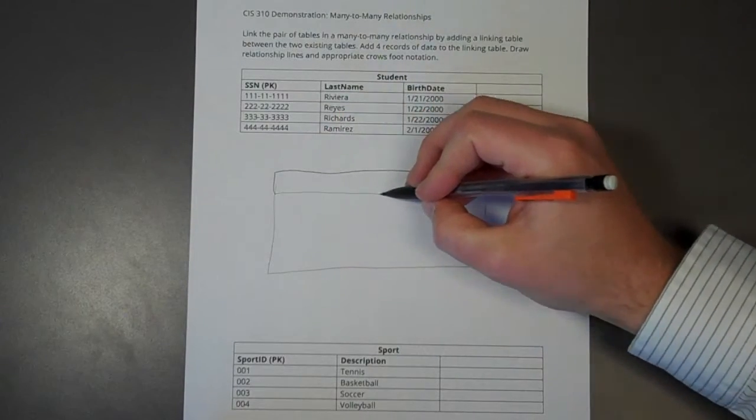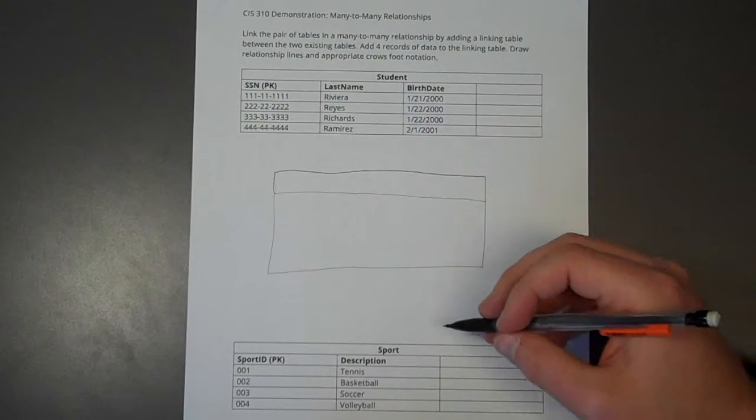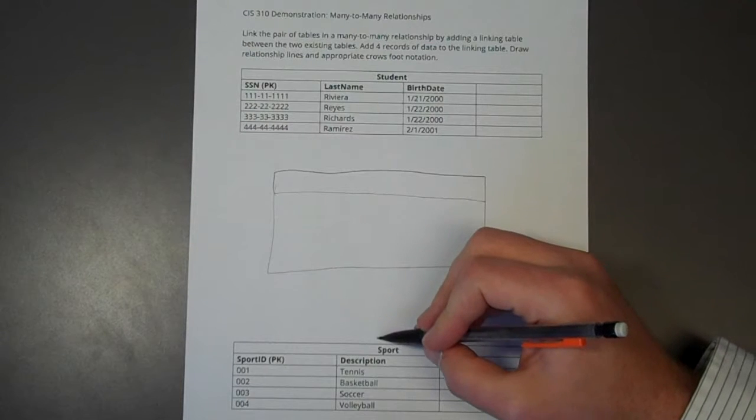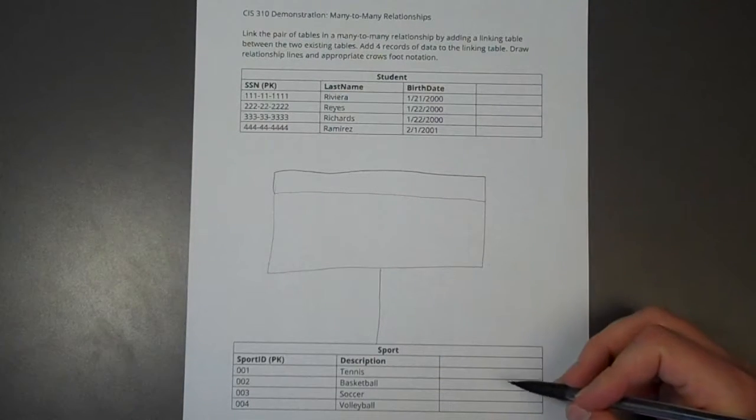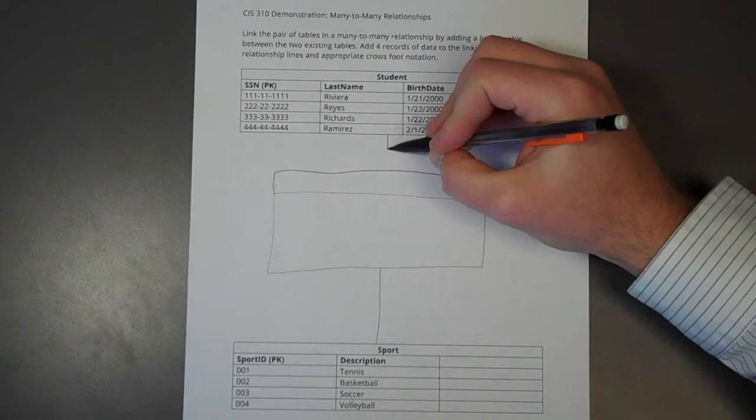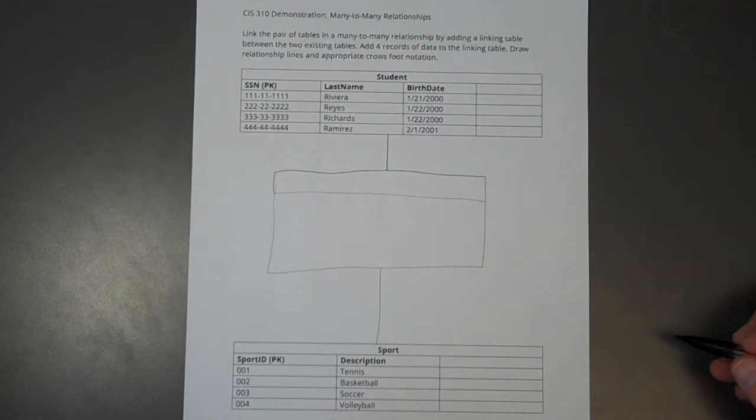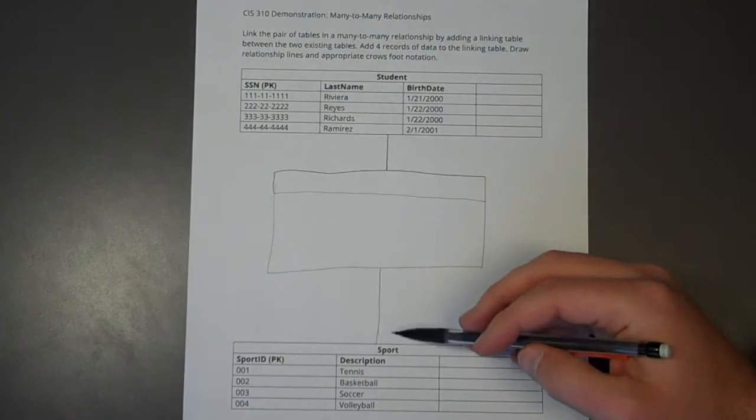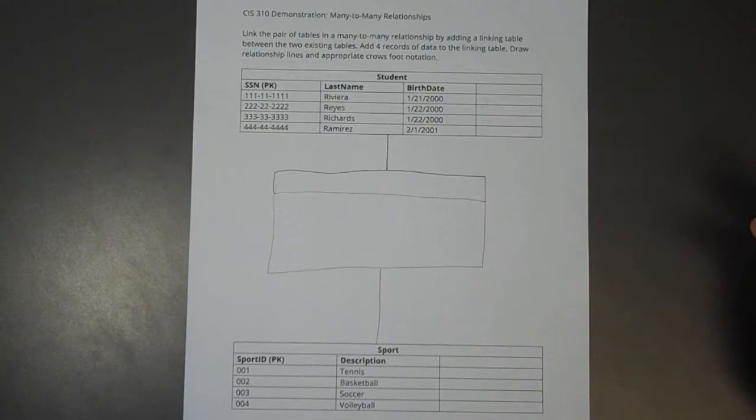So what is this linking or joining table comprised of? It's comprised of the primary keys of the two tables it is related to. So this linking table or this junction table is related to my sport table, and it's also related to my student table. Now which side of this relationship, actually both of these relationships, is the many side, and which is the one side?